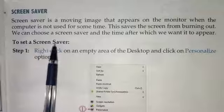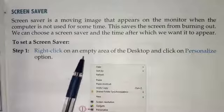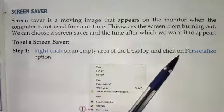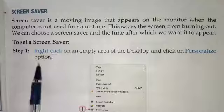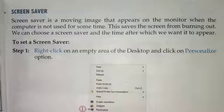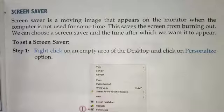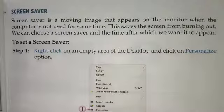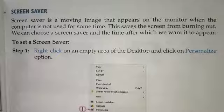To set a screen saver, the first step is to right-click on an empty area of the desktop and click on the Personalize option. Go to your desktop, right-click on an empty place, open the options menu, and select the Personalize option, which is the last option in the menu.